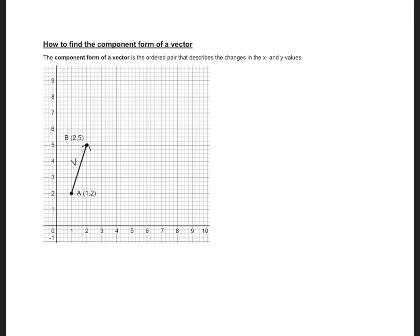Here we're going to look at how to find the component form of a vector. I have a vector V and you can see the starting point or the tail, and you can see the head is B.